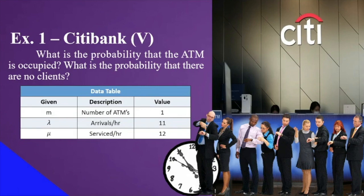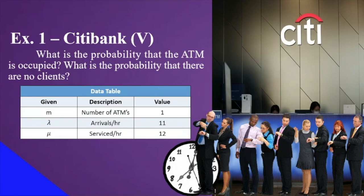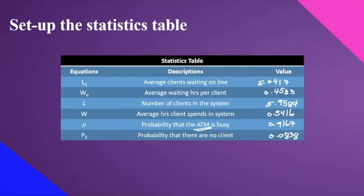So we have here the data given. Number of ATMs is 1. For the arrivals per hour, that is lambda — 11. And for the service per hour, that is 12. Based on our manual computations before, here are the statistics table. L sub Q is 5.04 — that is the average clients waiting in line and not in the whole system. The average waiting hours of those clients in the line, and not in the system as a whole, is 0.4583.